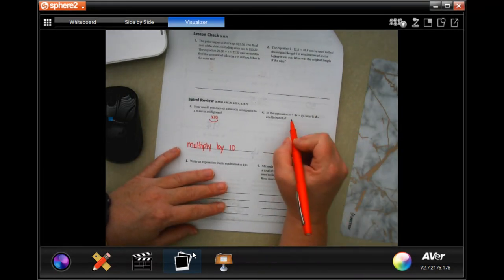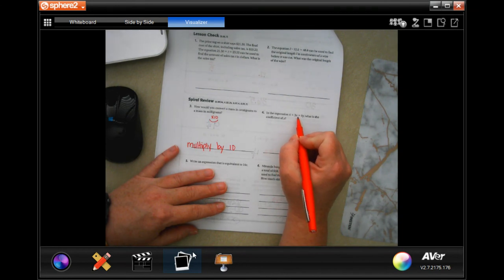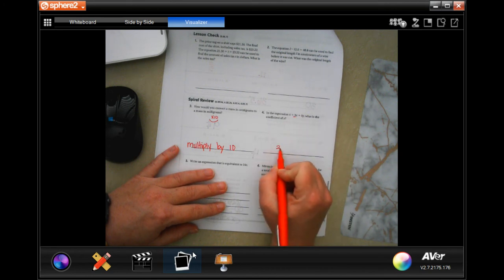In the expression 4 plus 3X plus 5Y, what is the coefficient of X? Well, the coefficient of X is just the number that's attached to it, 3.